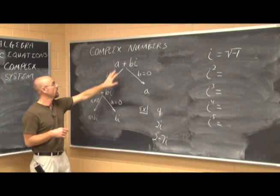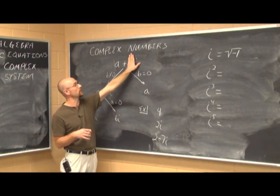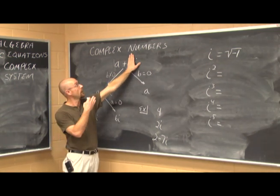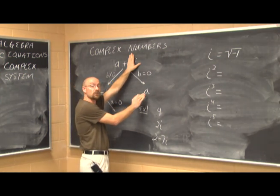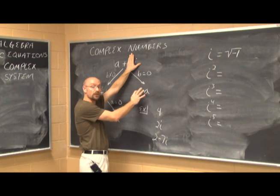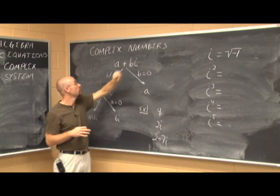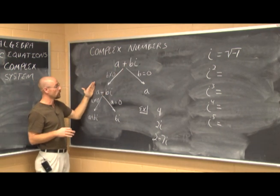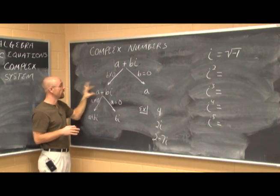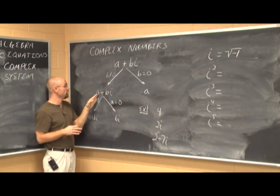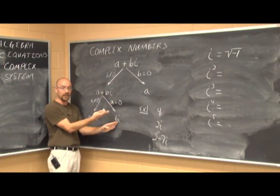Here, a and b are real numbers. If b is 0, then 0 times anything is 0, and a plus 0 is just a — a real number found on the number line. If b is not 0, we have our complex number a plus bi. And if a is 0, we would just have bi — a pure imaginary number, because it only has an imaginary part.